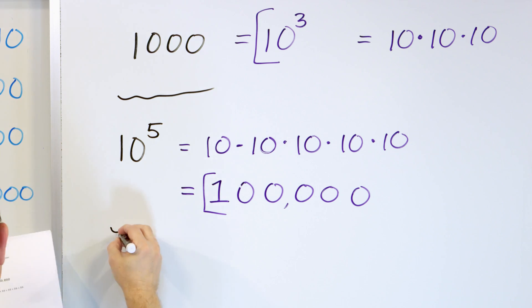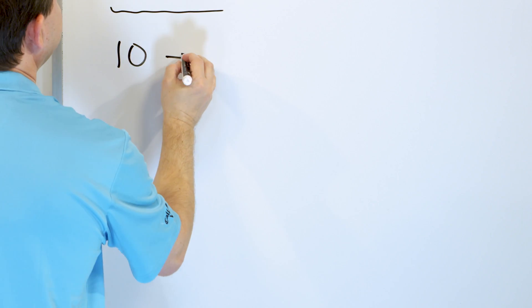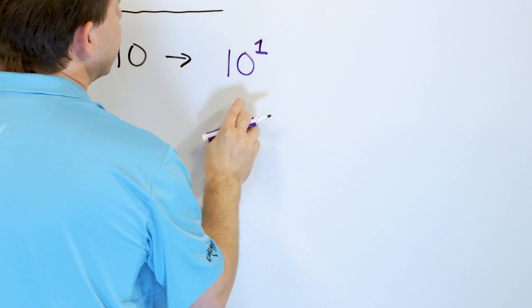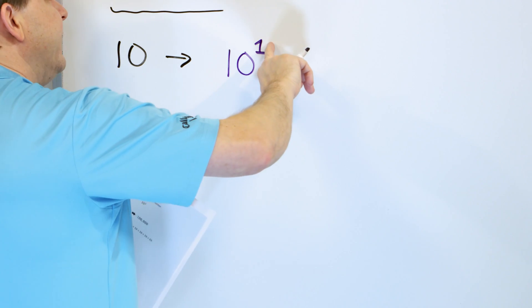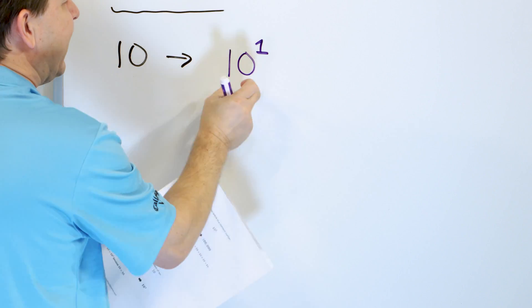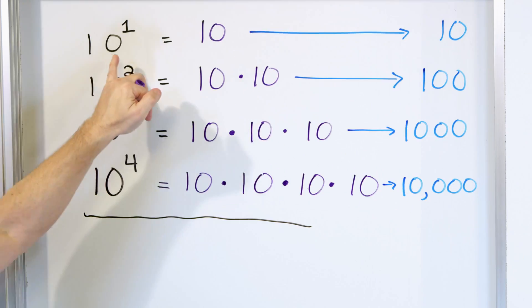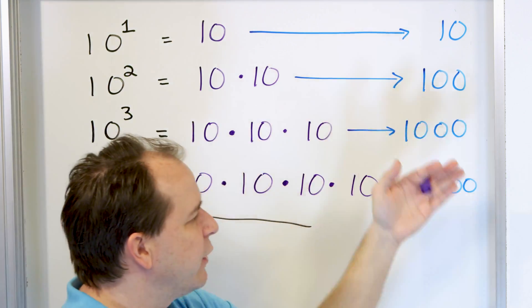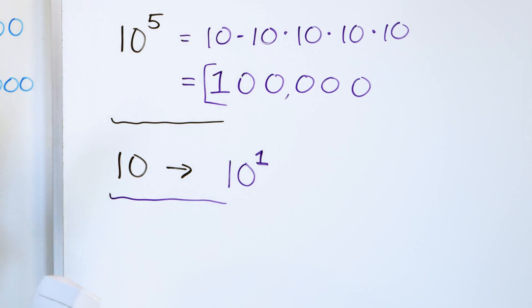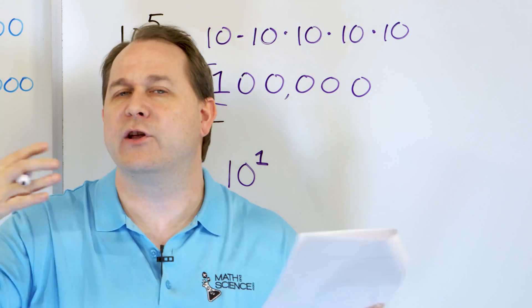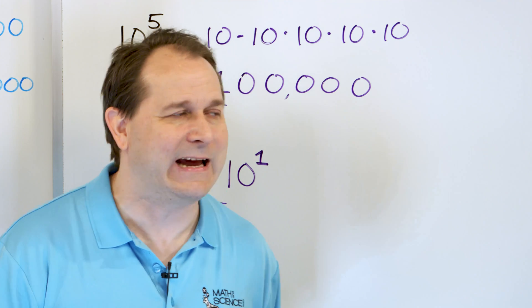Problem three: convert the number ten to a power of ten. The answer is just ten to the power of one. Remember, when you have a number raised to the exponent of one, you're not really multiplying it by anything. Ten to the power of one is just ten. Anything raised to the first power is just the number itself.